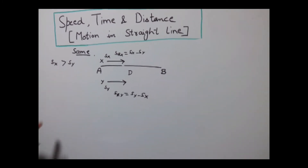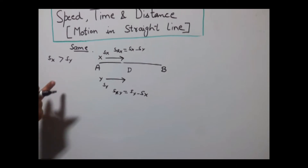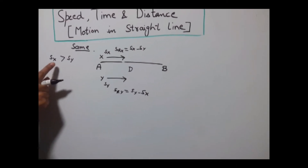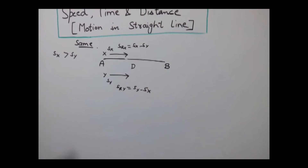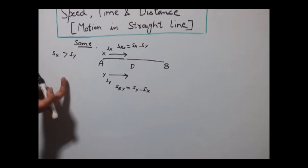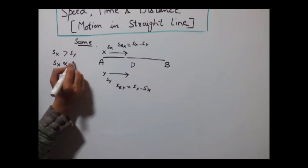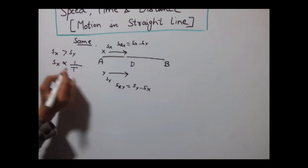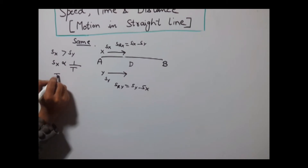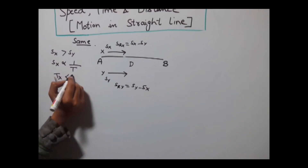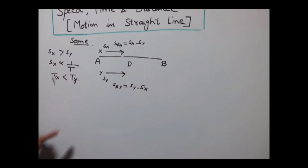As we discussed in our previous class, speed is inversely proportional to time. That is, if speed is more, then the time taken by that object to cover the same distance will be less. So time taken by object X will be less as compared to time taken by object Y to travel the same distance.